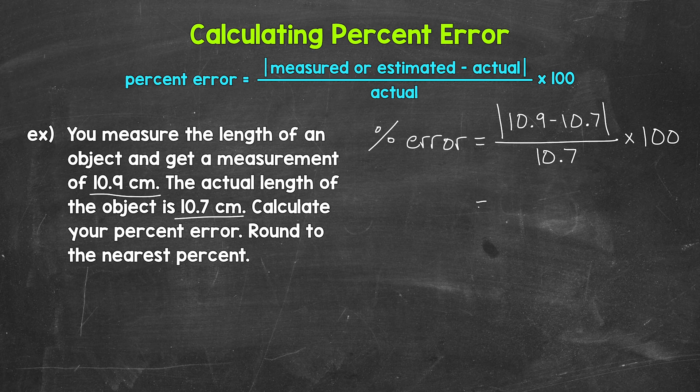So we have 10.9 minus 10.7. That gives us 0.2, two tenths. And we need to divide that by the actual value times 100. Now we need the absolute value of two tenths, which is just two tenths.